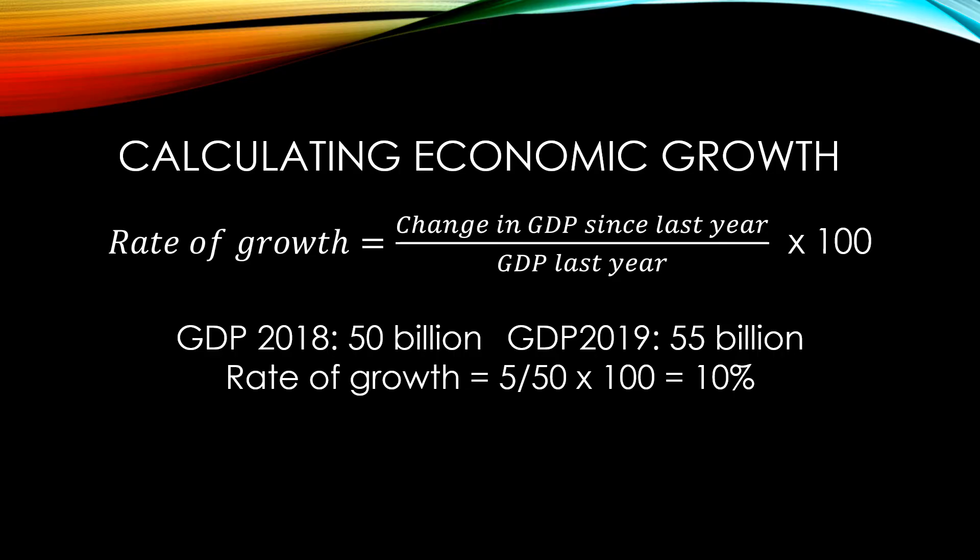If GDP in 2018 were 50 billion, and GDP in 2019 were 55 billion, then the rate of growth would have been 10%. This would be an extraordinary amount of growth.